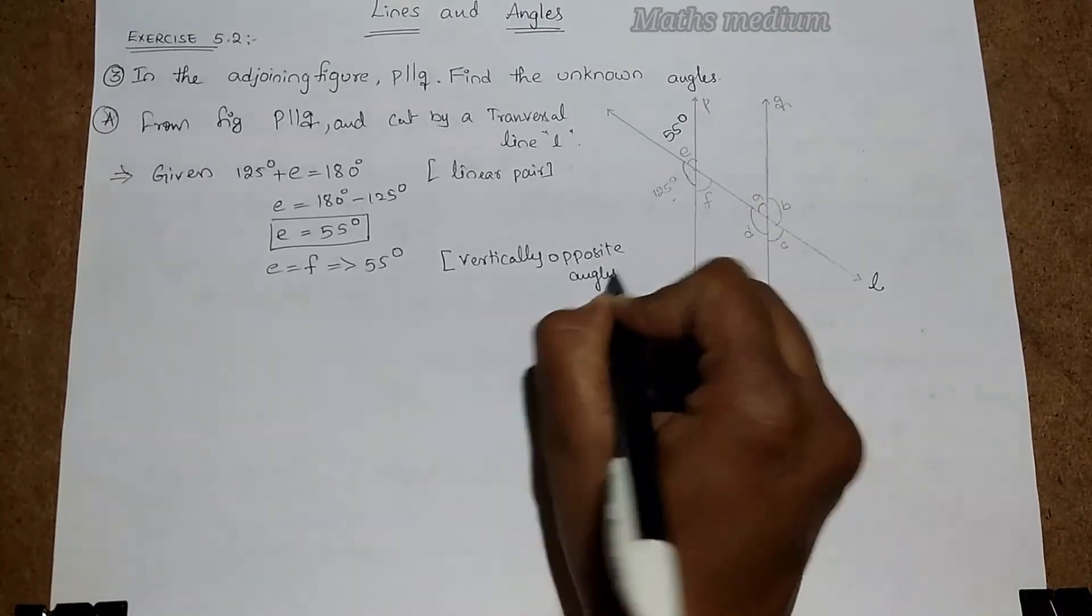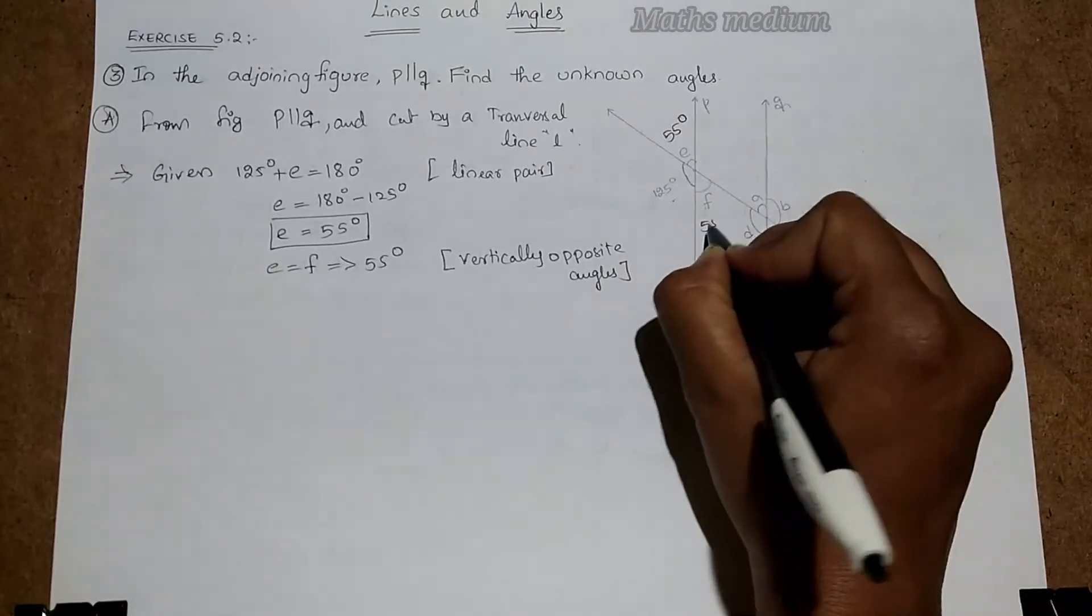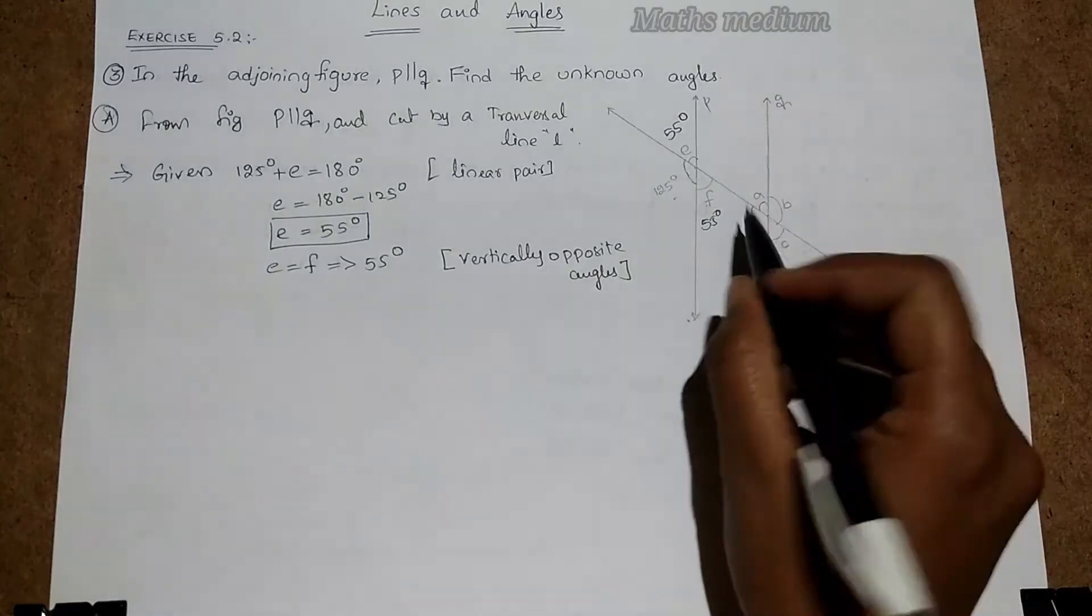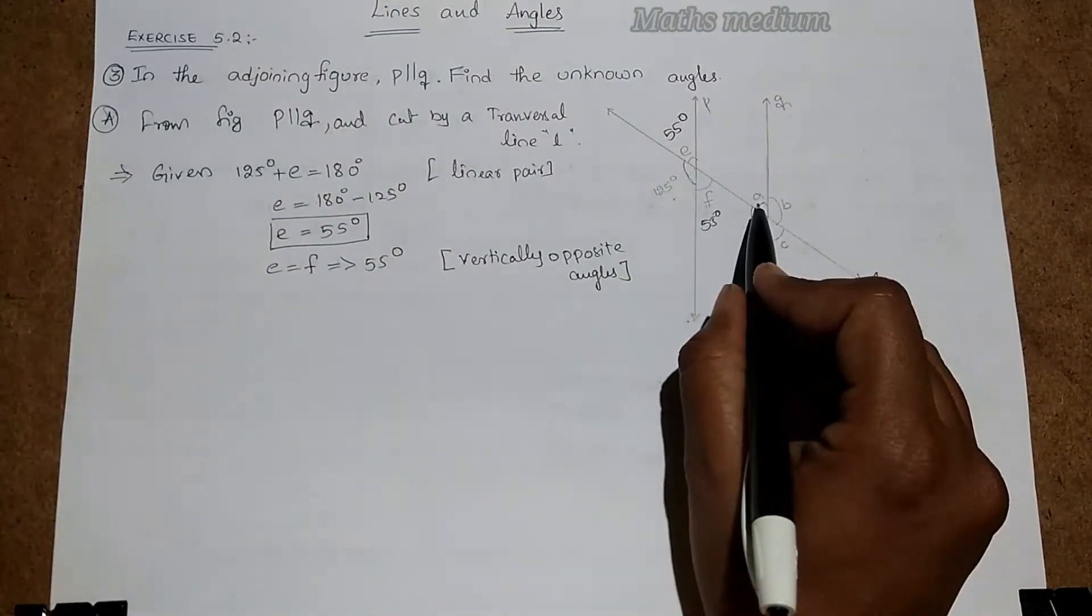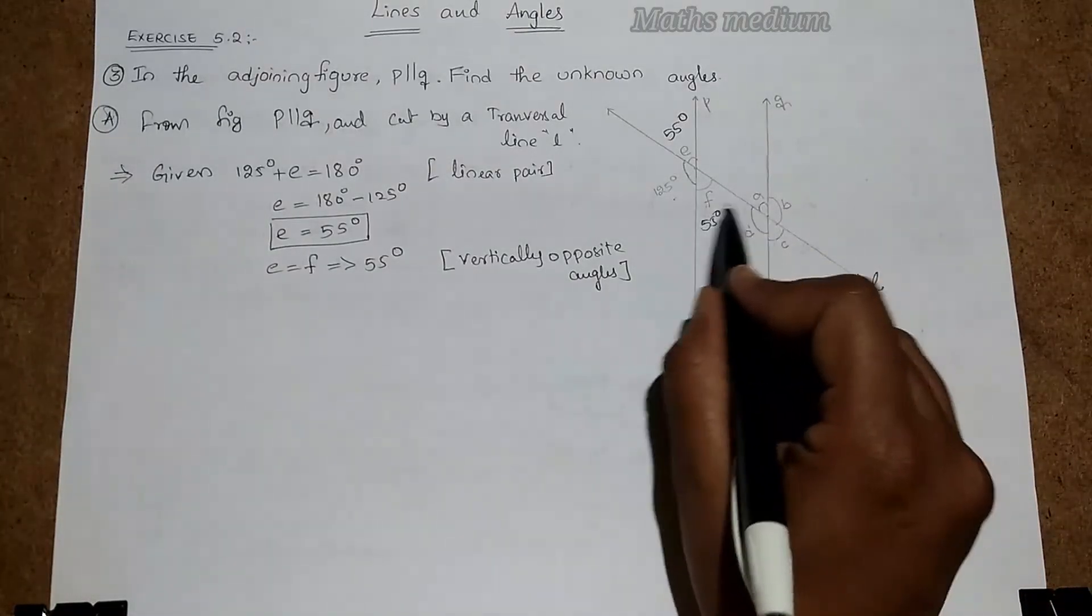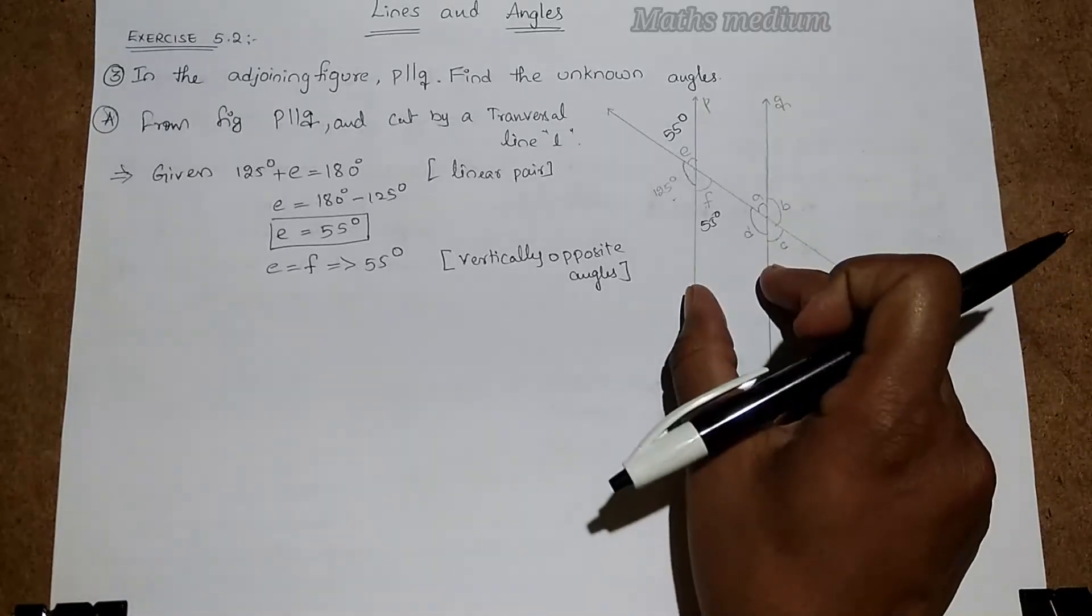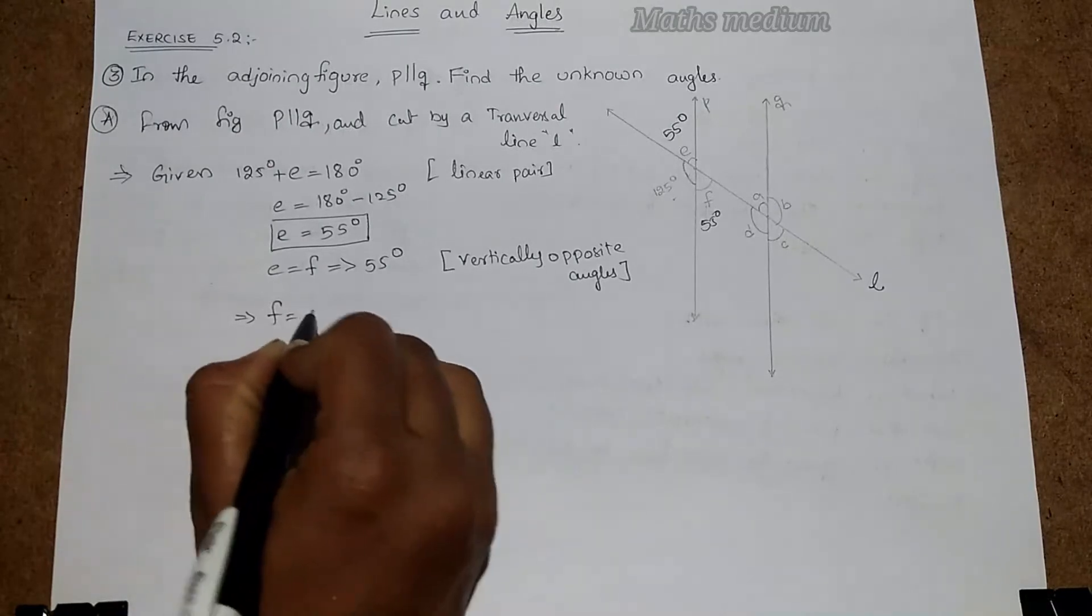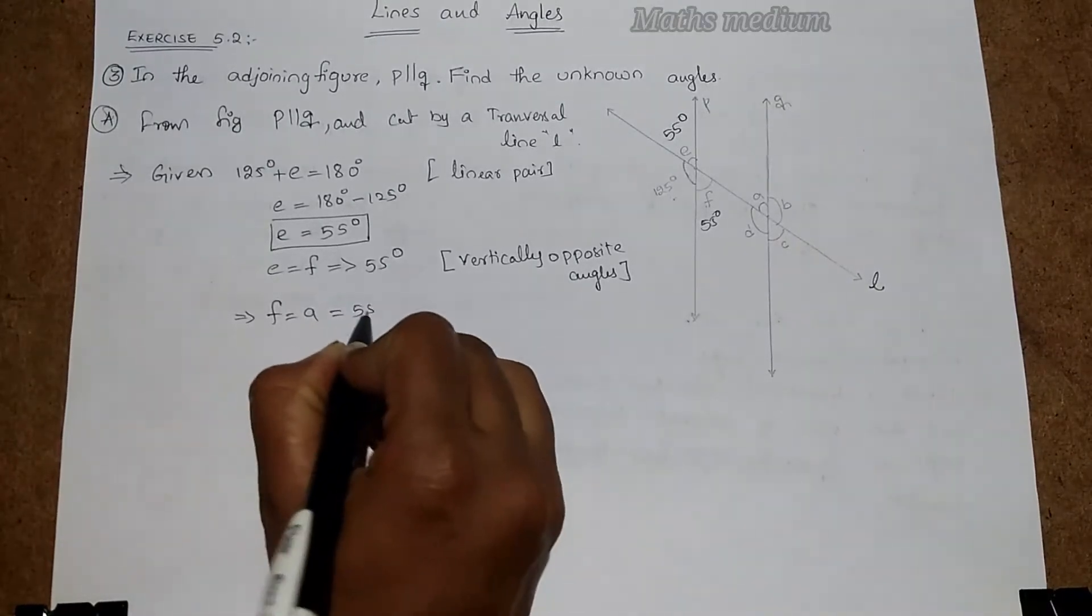We can find F also, that is 55 degrees. Next, coming to here, F and A are alternate interior angles. In a parallel line also equal, so that implies F equal to A, that equal to 55 degrees, alternate interior angles.